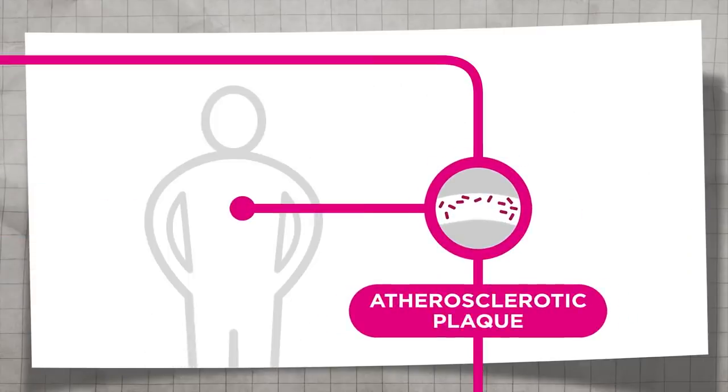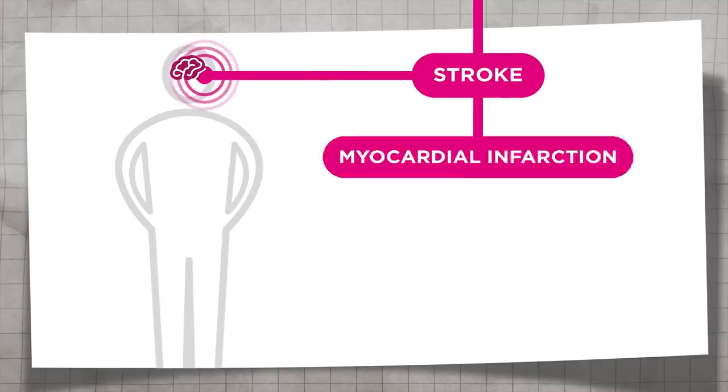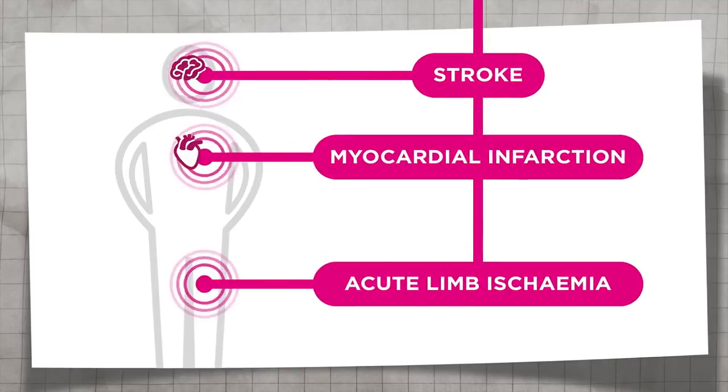Atherosclerosis is a systemic disease characterized by the formation of plaques in the arteries. Depending on the arteries affected, this can lead to stroke, myocardial infarction, or acute limb ischemia.